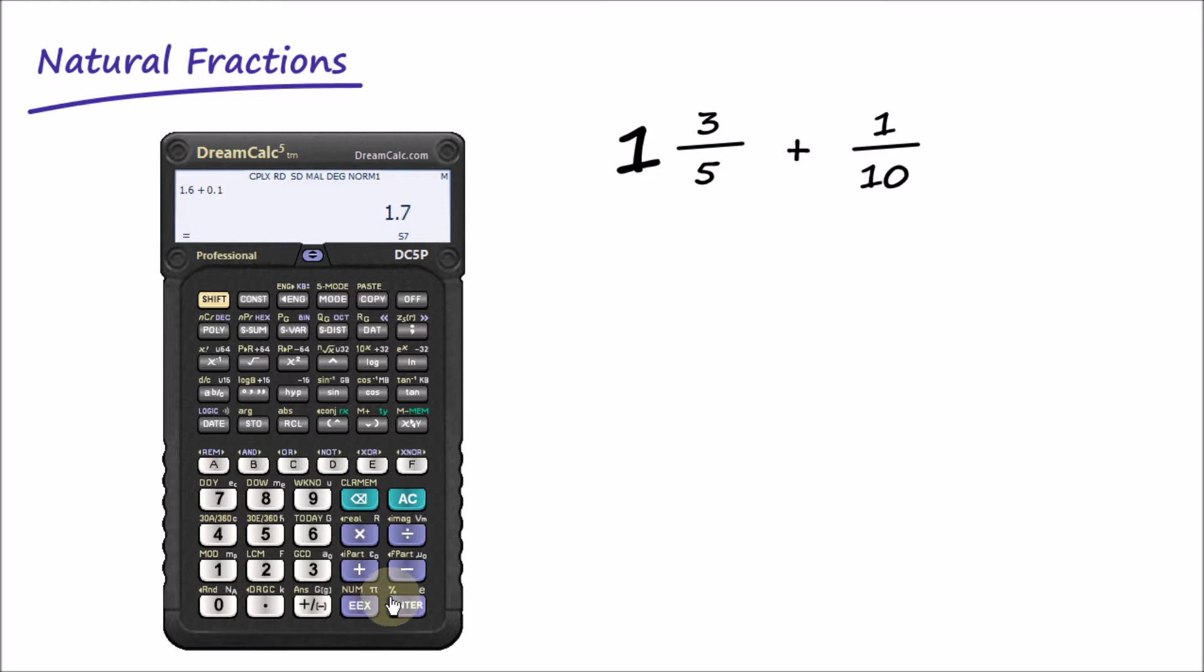1.7. By default, the result is given as a decimal value. But we can easily show this as a natural fraction using the fraction key once more. Natural fraction, 1 plus 7 over 10.